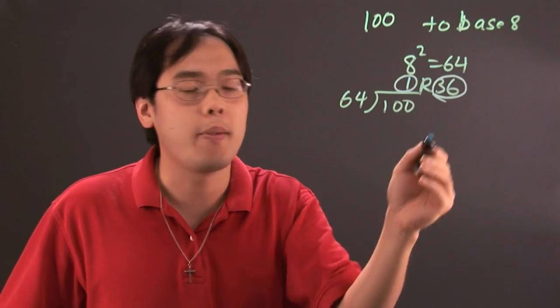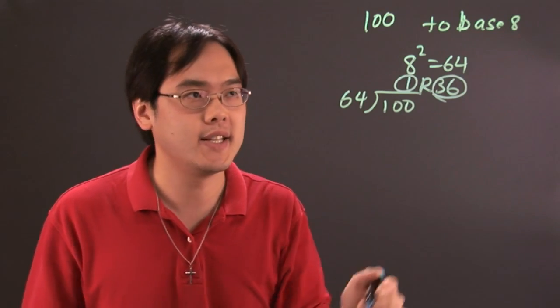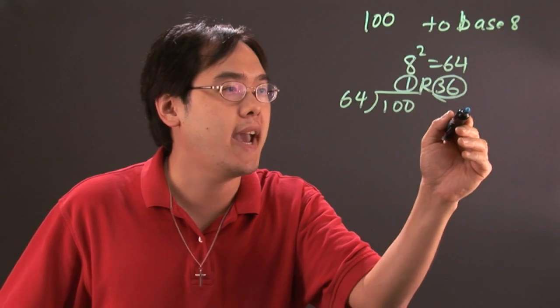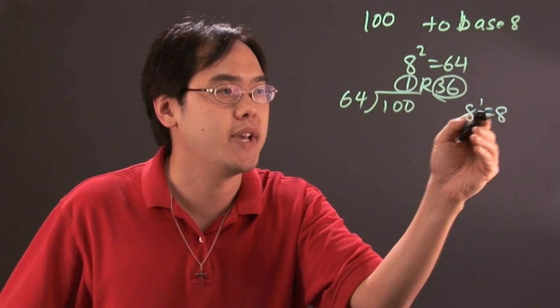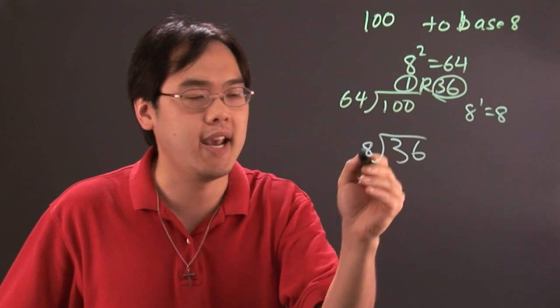We're going to take this remainder and we're going to divide by the next lower power of 8. So we went from 8 squared which is 64. We're going to go with now 8 to the first which is going to be 8. So we're going to divide 36 by 8.